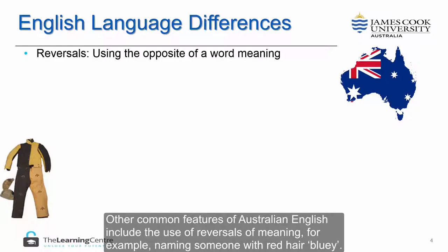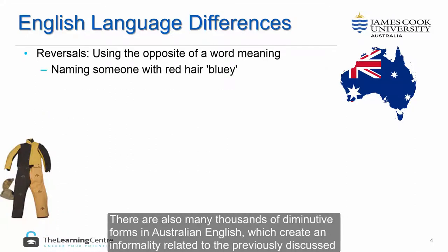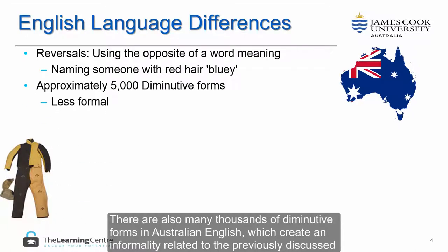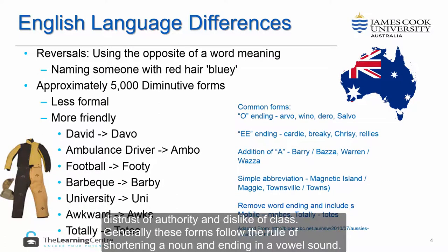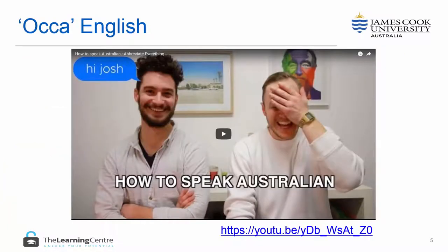Other common features of Australian English include the use of reversals of meaning — for example, naming someone with red hair 'bluey'. There are also many thousands of diminutive forms in Australian English, which create an informality related to the previously discussed distrust of authority and dislike of class. Generally, these forms follow the rule of shortening a noun and ending in a vowel sound. A short YouTube video provides some examples of this particular feature.